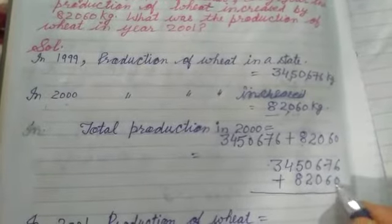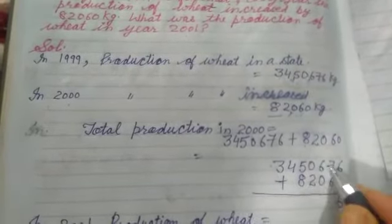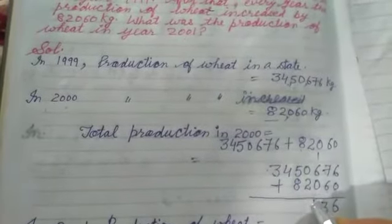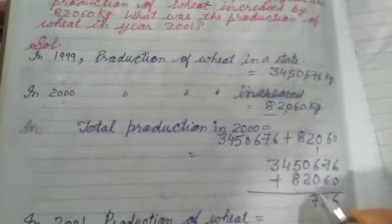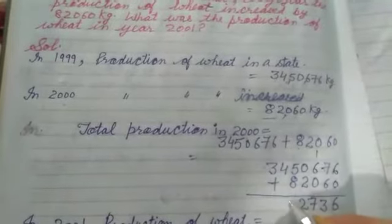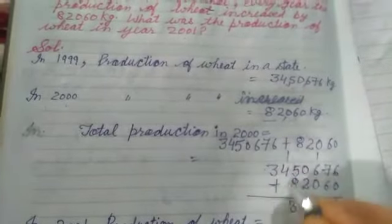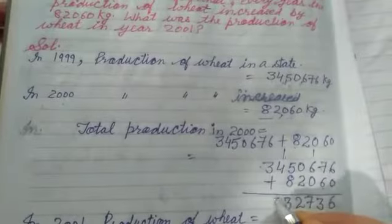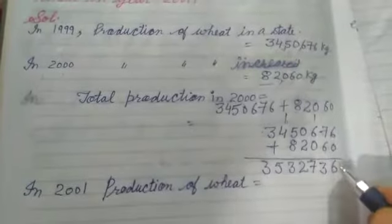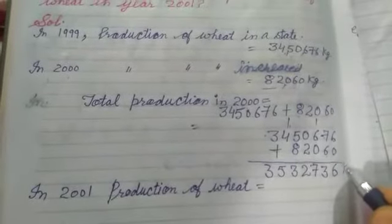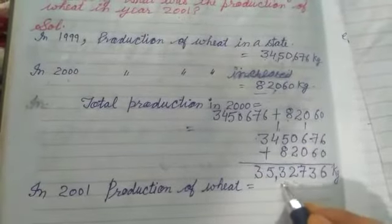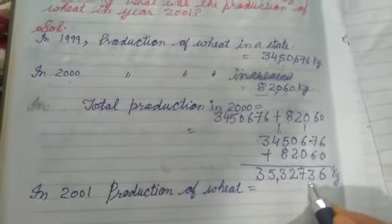Column by column addition: 6 plus 0 = 6, 7 plus 6 = 13, carry 1; 6 plus 0 = 6 plus carry, 7; 0 plus 2 = 2; 5 plus 8 = 13, carry 1; 4 plus 1 = 5; 3 rahega. Toh 2000 mein kitni production? 35,03,736.